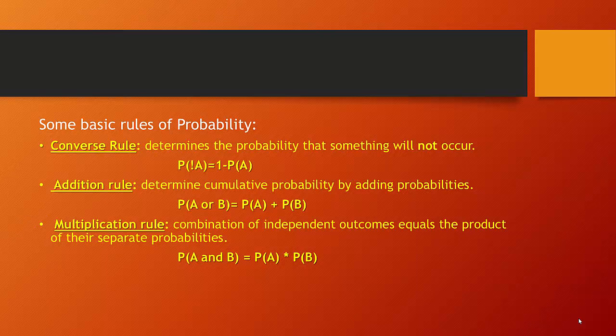The addition rule helps us understand cumulative probabilities by adding probabilities together. For example, let's say that you were playing cards and you were wondering: what's the probability of getting a heart or a diamond? If we understand that there are four suits in a deck of cards, so there's a 1 in 4 chance of each, then the probability of getting a heart or a diamond would be 1 in 4 plus 1 in 4, or a 1 in 2 chance.